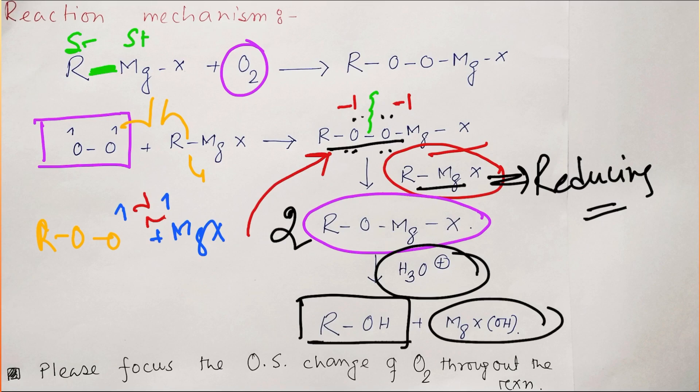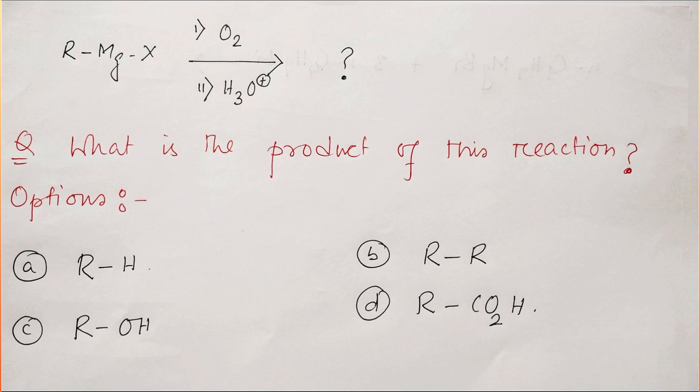Now the question is: what is the oxidation state? See, oxygen from the beginning was in zero oxidation state. After peroxide formation, it's in -1 oxidation state. Further reduction, it is in -2 oxidation state. This carbon is getting oxidized and oxygen is getting reduced throughout the reaction. So what is the answer to this problem? This answer is alcohol.